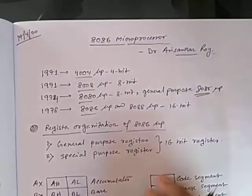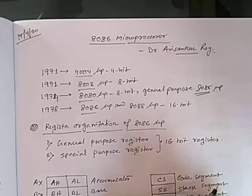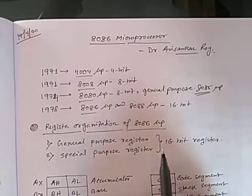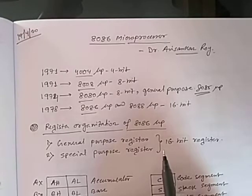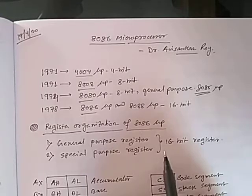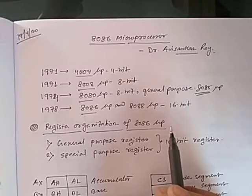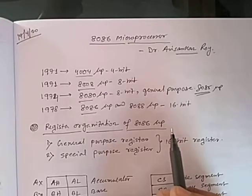What are the limitations of the 8085 microprocessor? Number one: low speed. Number two: low memory addressing capability. Number three: limited number of general purpose registers. Number four: less powerful instruction set. All these limitations are reduced in the 8086 microprocessor. The peripheral chips designed earlier for 8085 were compatible with the 8086 with slight or no modifications.